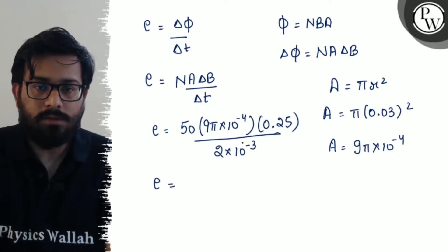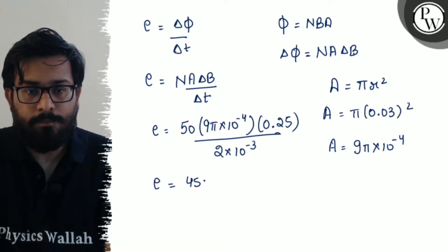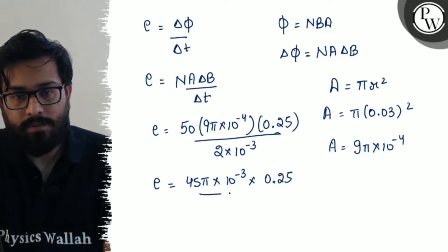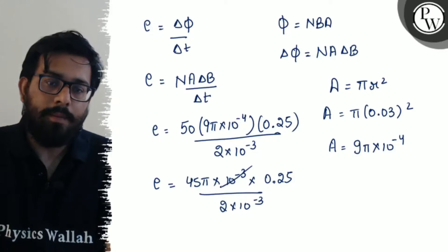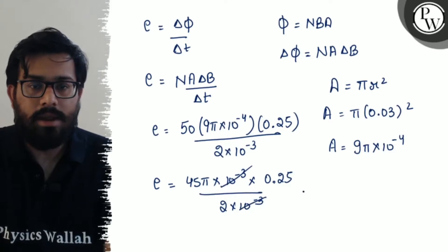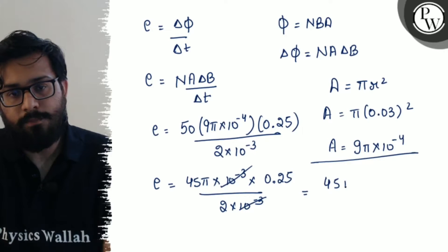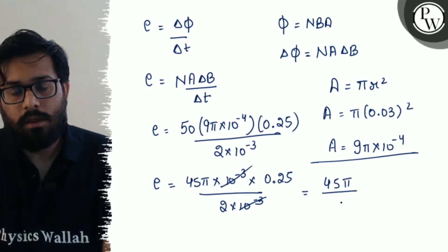Solving it further, this can be written as 45 pi times 10 to the power minus 3 times 0.25 divided by 2 times 10 to the power minus 3. The 10 to the power minus 3 terms cancel out. Solving it further, you will get the answer as 45 pi upon 8.